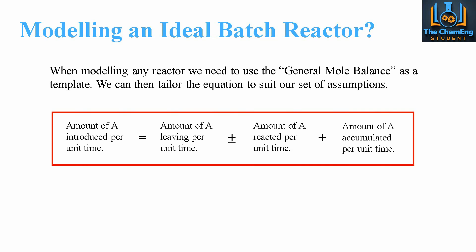The general mole balance states that the amount of A produced per unit time equals the amount of A leaving per unit time, plus or minus the amount of A which reacts per unit time. The plus and minus denote whether we are producing or consuming A, then plus the amount of A accumulated per unit time.